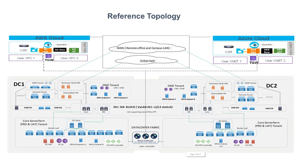To start with, I want to present you a reference topology. In this topology, you have DC1 and DC2, and both DCs have your typical data center building blocks like DMZ Tenant, WAN Tenant, Extranet, Core Server Farm Block — all those elements interconnected using various L4 and L7 devices.